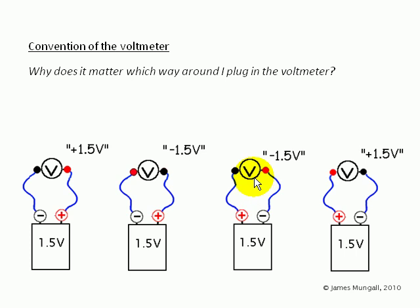In this third picture, the voltmeter is the same way round as the first diagram, but the battery is being swapped, so this also reads negative 1.5 volts.